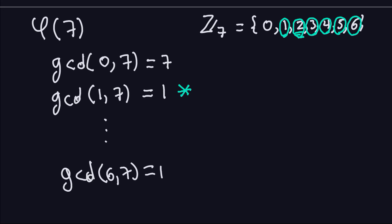So in this case, how many do I have? If you count how many are relatively prime from this collection, I have exactly 6 — from 1 through 6. So phi of 7 is equal to 6.